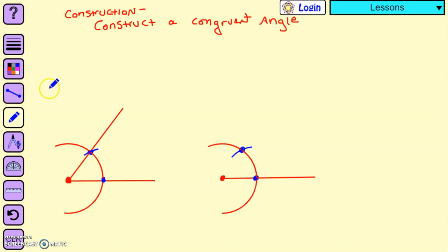Now what I'm going to do is I'm going to use my segment tool and I am now going to connect the vertex to that other blue point. There you have the congruent angle. Now just for fun...